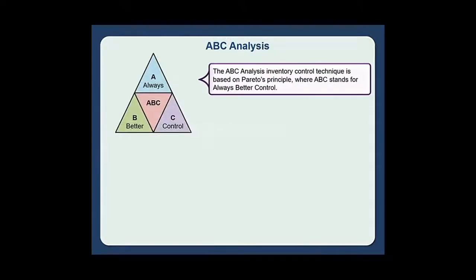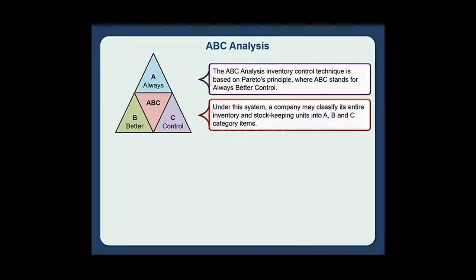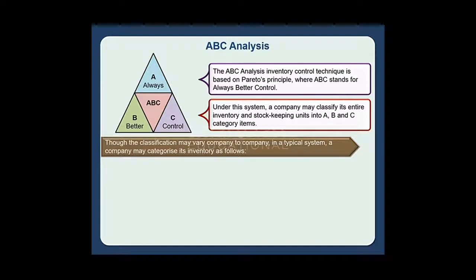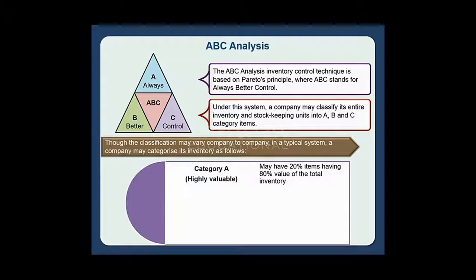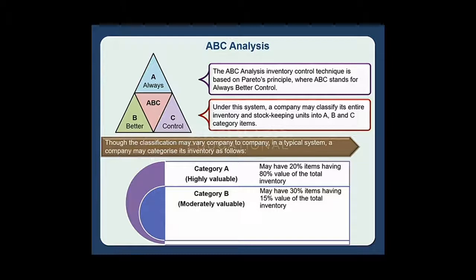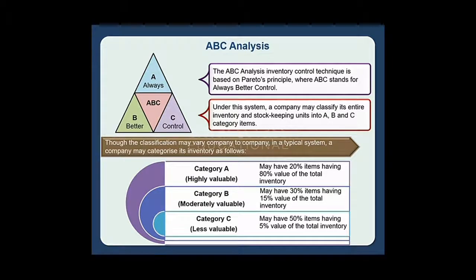The ABC analysis inventory control technique is based on Pareto's principle, where ABC stands for Always Better Control. Under this system, a company may classify its entire inventory and stock-keeping units into A, B, and C category items. Though the classification may vary from company to company, in a typical system: Category A may have 20% of items having 80% of the total inventory value; Category B may have 30% of items having 15% of the total inventory value; and Category C may have 50% of items having 5% of the total inventory value.